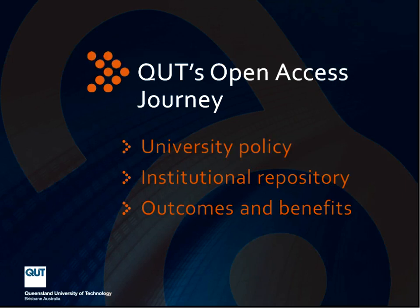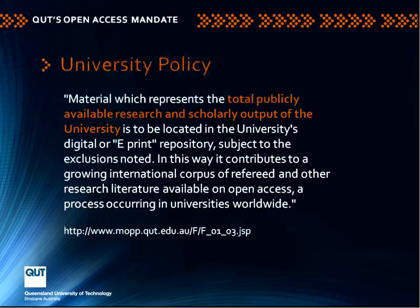I want to talk about the university policy, the development of our institutional repository, and then some of the evidence about outcomes and benefits we've observed. What exactly did the policy say? It was about the total publicly available research and scholarly output of the university going into an institutional repository, and in that way becoming available worldwide.